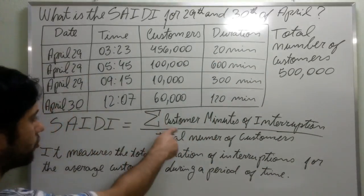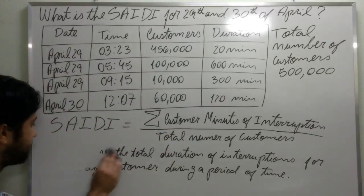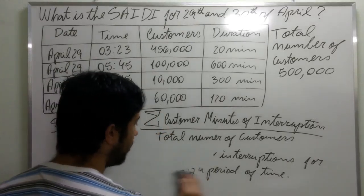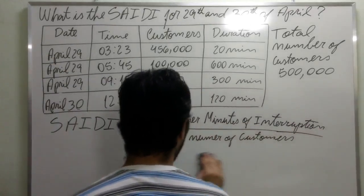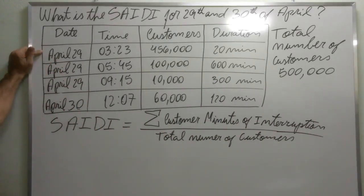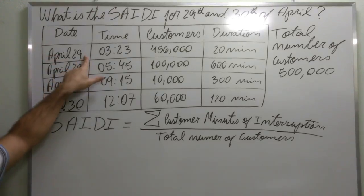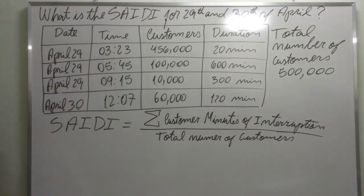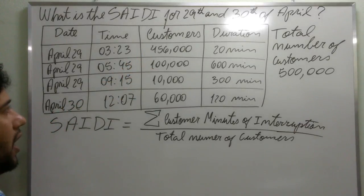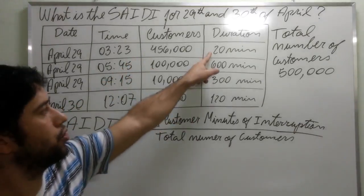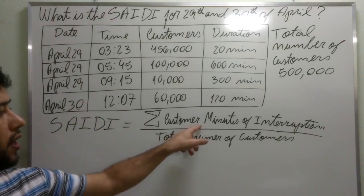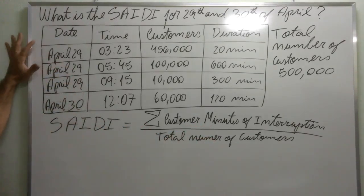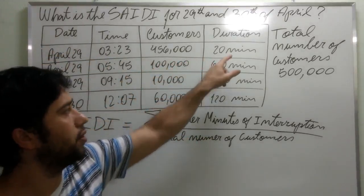The table shows customer minutes of interruption for the day April 29th. On April 29th at 3:23 AM, 456,000 customers were interrupted for 20 minutes — this is the data provided by the utility. The customer minutes for this specific event is the product between the number of customers and the duration of the interruption.